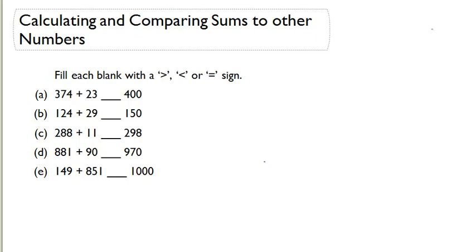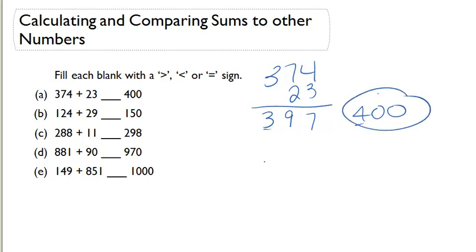374 plus 23. Let's find that sum. 4 plus 3 is 7. 7 plus 2 is 9. We have 397. 397 versus 400. Start from left to right. We have a 3 in the hundreds and a 4 in the hundreds. Therefore we know 400 must be greater than 397. So we can fill in the blank with the greater sign.